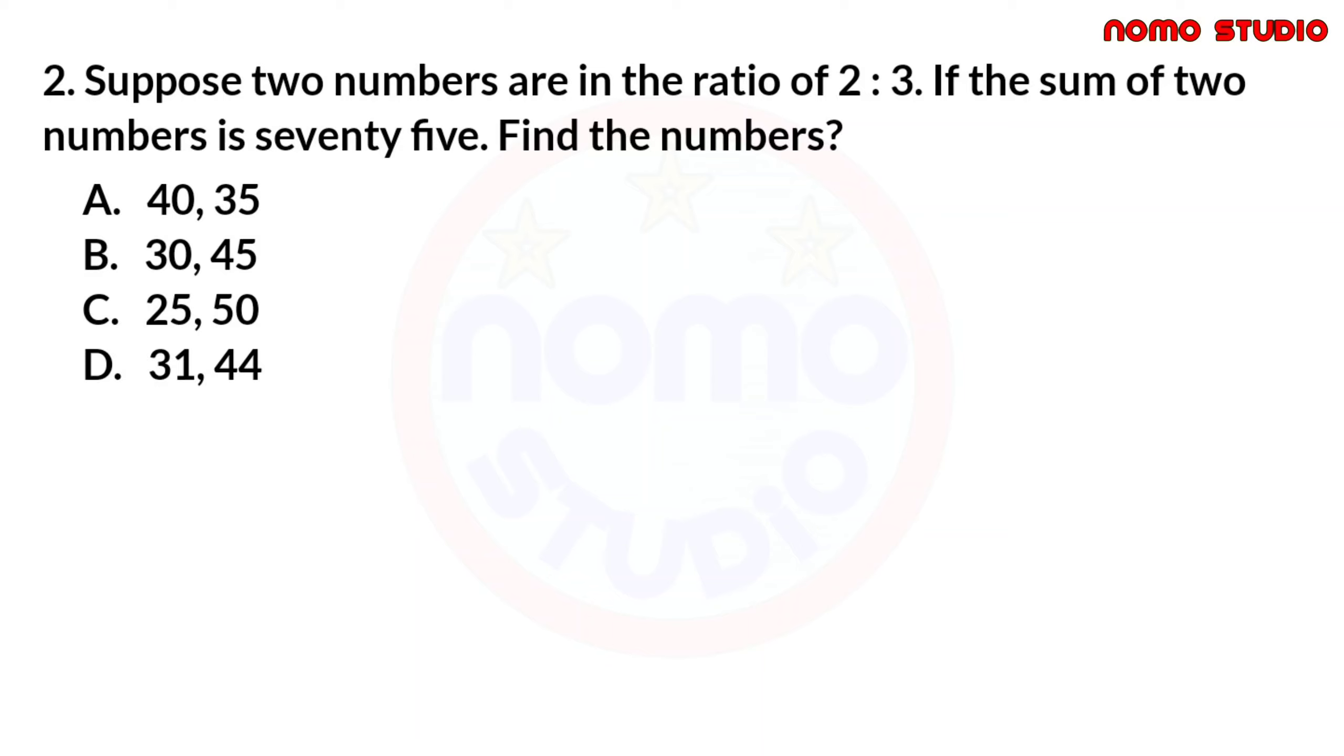As given in the question, the two numbers are in the ratio of 2 is to 3. And if we add these two numbers, their sum is 75. Obviously, all of our choices have a sum of 75. But the question is, which is the correct answer? Now, let's assume that the first number is 2x and our second number is 3x. And when we take the sum of these two numbers, which is 75, therefore, we have 2x plus 3x and that is equal to 75.